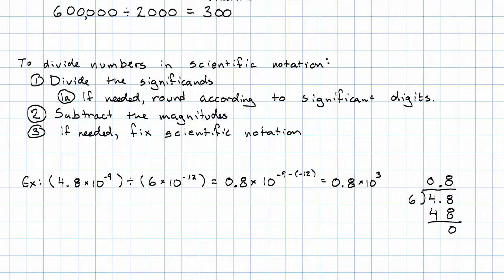Fix the scientific notation. 0.8 is 8 times 10 to the negative 1. So this is 8 times 10 to the negative 1 times 10 to the seventh. So 8 times 10 to the sixth.